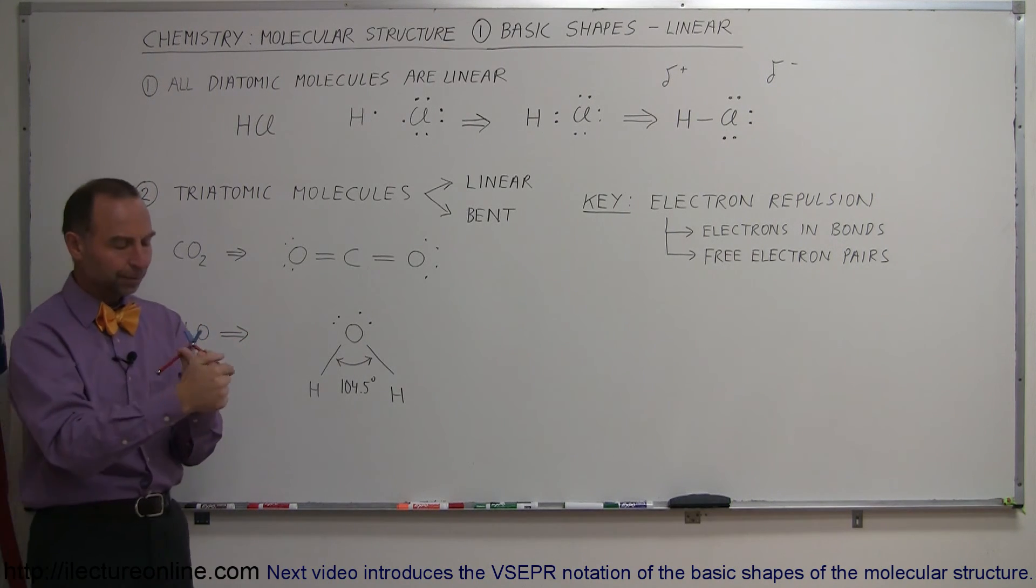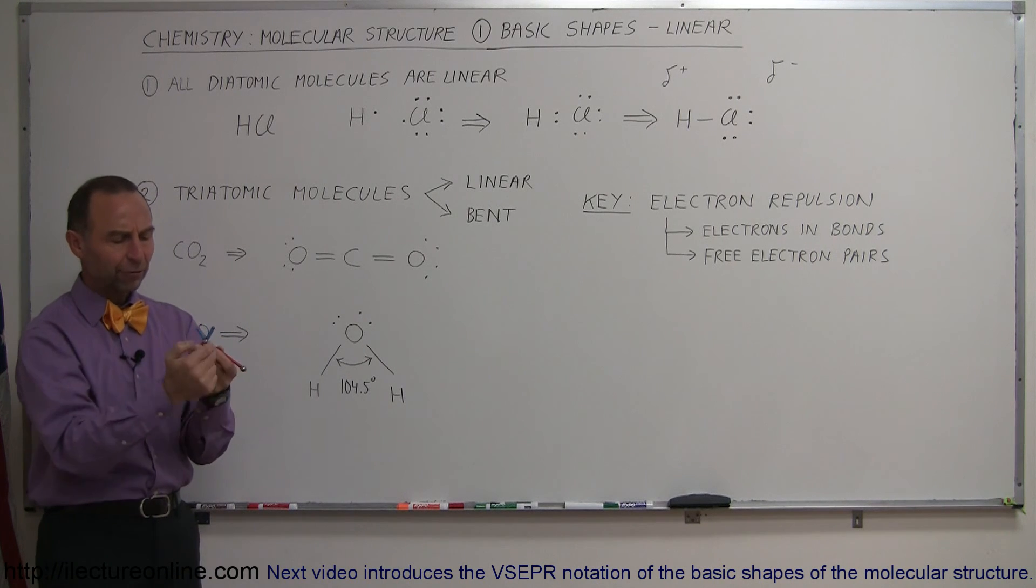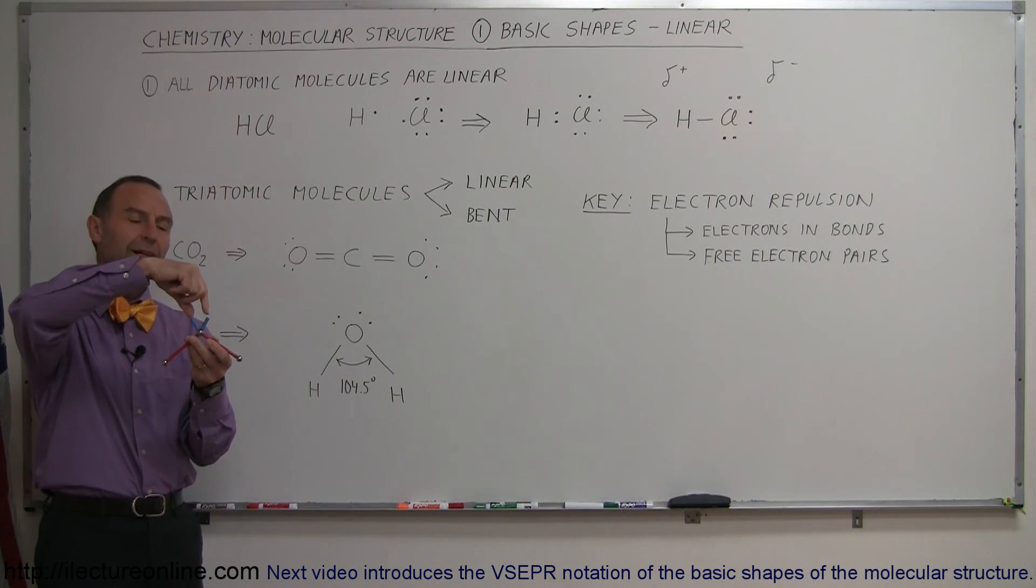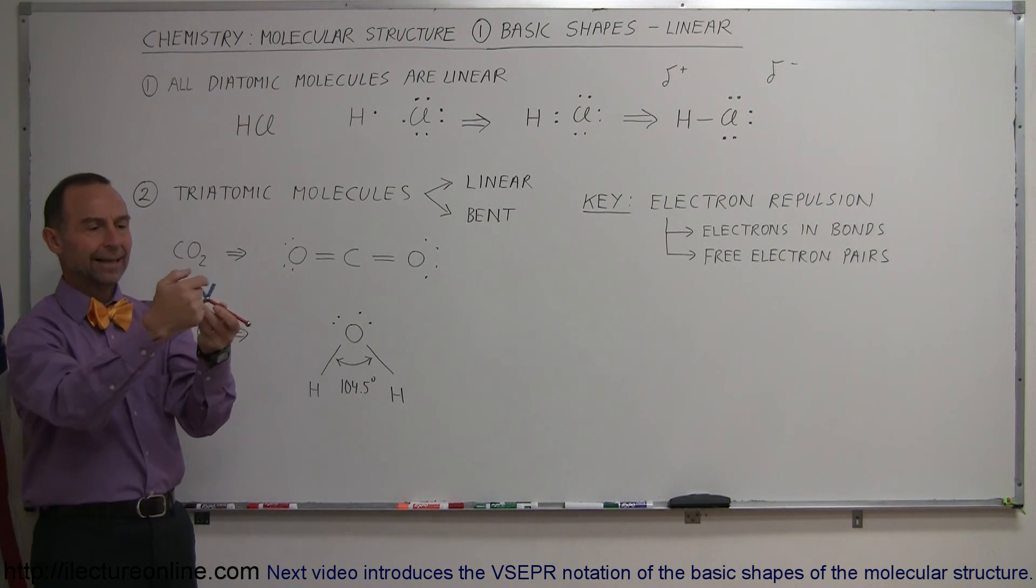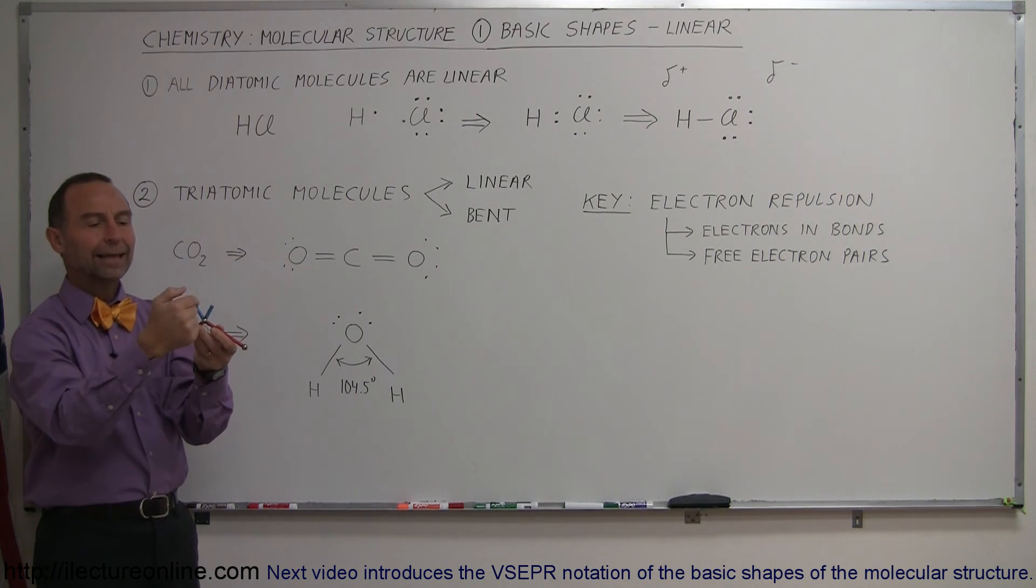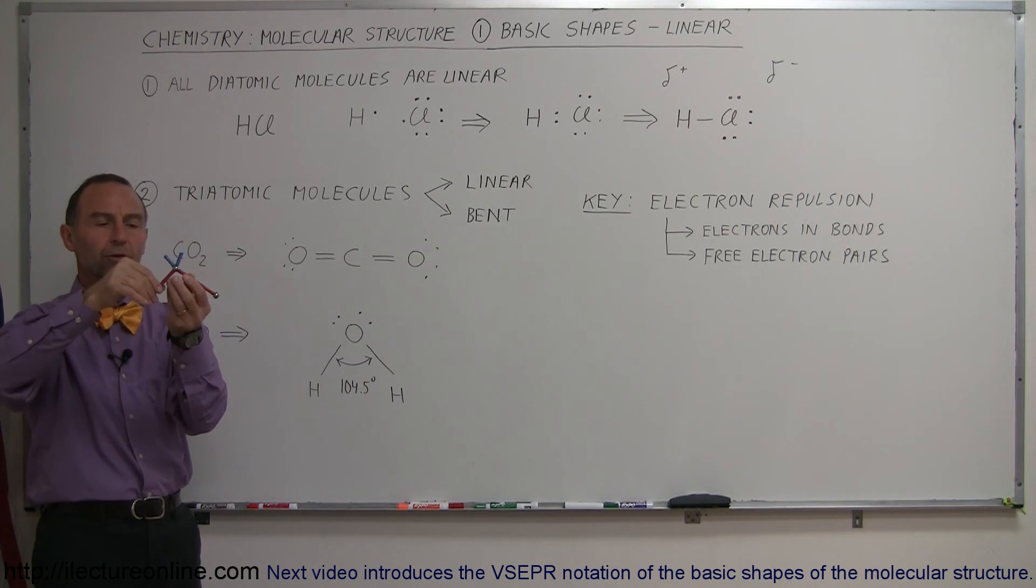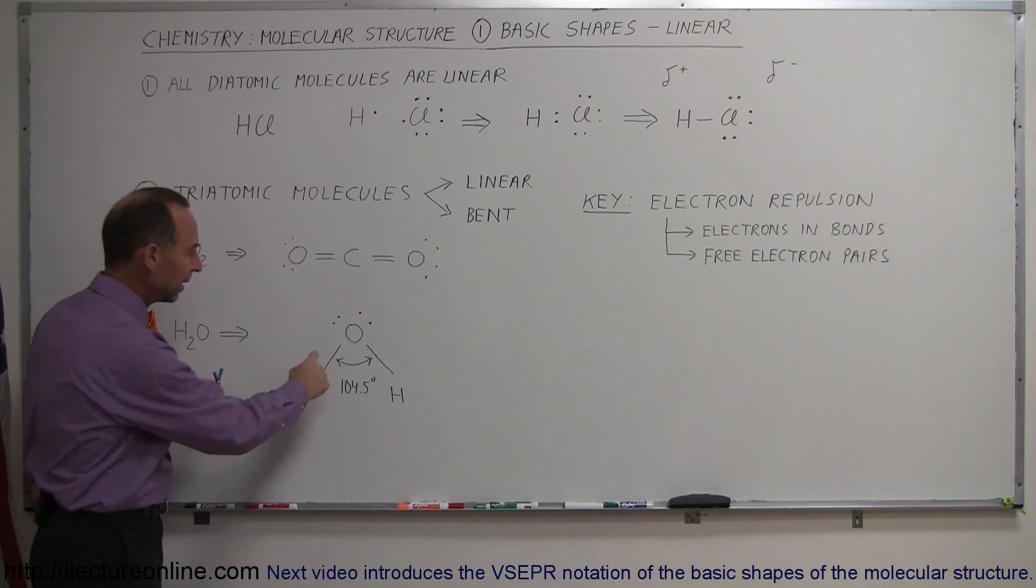Here we have the oxygen in the middle, two hydrogens forming the bond like this. But then we have what we call the free electron pairs, represented with these blue little extensions right here. They repel each other and they also repel the electrons used in the bonding, causing the molecules to be bent in this particular shape.